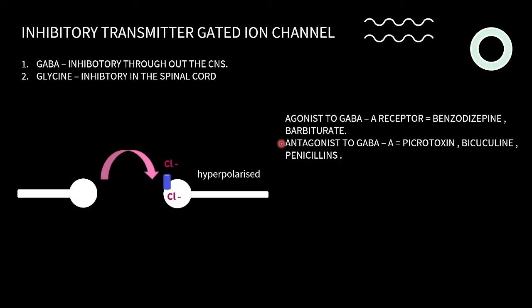Antagonists to GABA-A receptor include picrotoxin, bicuculline, and penicillin. They antagonize the GABA-A receptor so chloride cannot enter, preventing hyperpolarization and inactivation — indirectly stimulating the neuron. When these antagonists act and keep the channel closed, it can lead to overactivation of the neuron and may precipitate seizures.